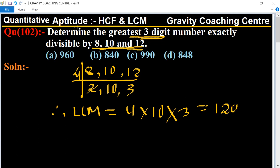Now we check the greatest three digit number. We know that the greatest three digit number is 999. Now we check. First we multiply 120 by 10.